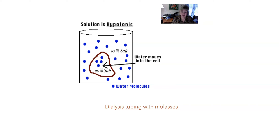One thing I wanted to mention, because the lab is partially about this, is hypotonic, isotonic, and hypertonic solutions. Isotonic means you have the same number of water molecules and solute molecules inside and outside the cell. Solute molecules are just molecules dissolved in water — in this example, salt is the solute. In a hypertonic solution, think 'hyper' — tons and tons of sugar. Lots of sugar means very few water molecules. So a hypertonic solution outside the cell means very little water outside and more water inside.